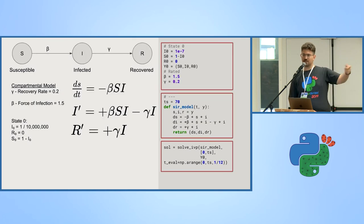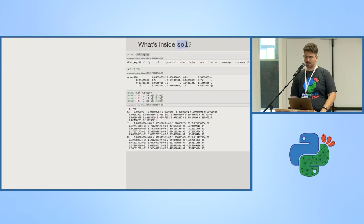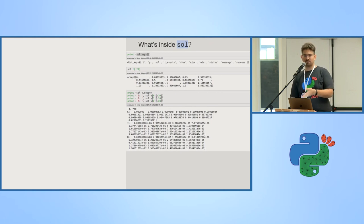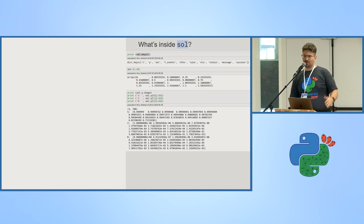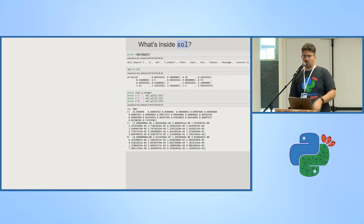The result is a solution object. sol.t gives us the time points, and sol.y gives us the solution — shape 3 by 780, because we have one row per compartment and 780 monthly timesteps. We can now plot that. Anyone have a guess of how this is going to look?